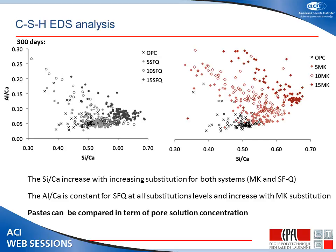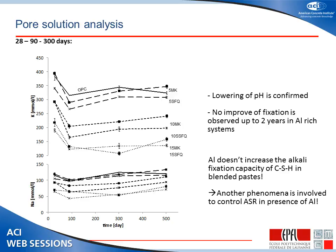Looking at the pore solution results, we see as expected that the alkalinity of the pore solution is reduced with increasing substitution levels. Quite surprisingly, however, we saw that silica fume — the addition of only silica — actually seems to be somewhat more efficient in reducing the pH compared to the metakaolin. So even though metakaolin provides extra alumina, which is supposed to be better at reducing ASR, it is not acting through reduction of the pore solution alkalinity.